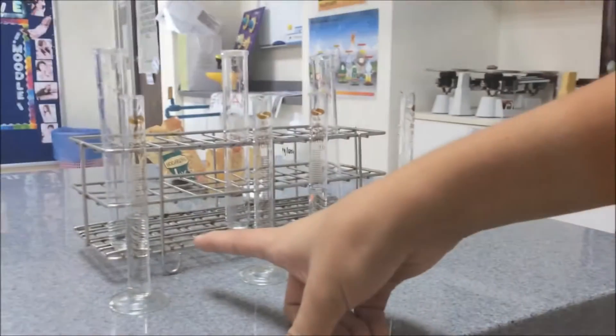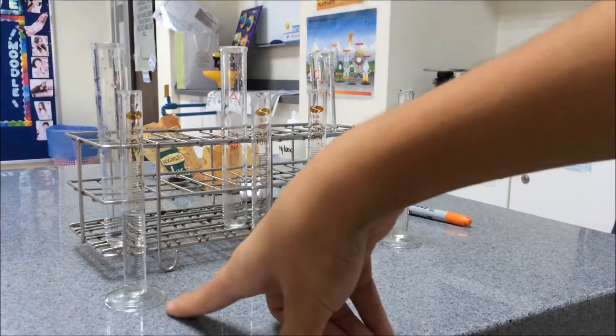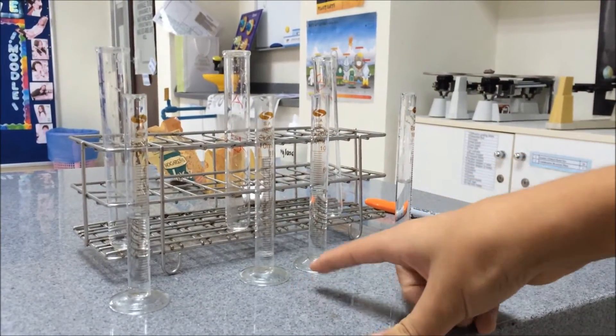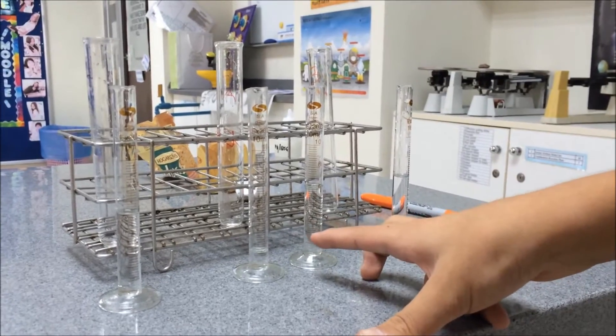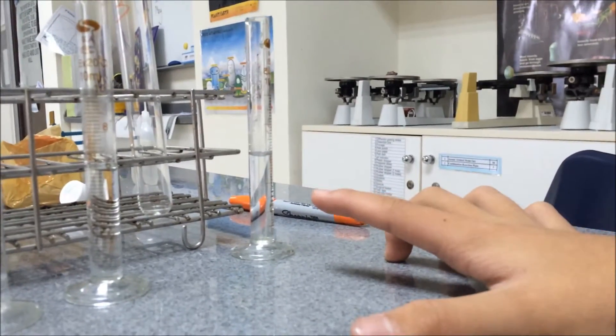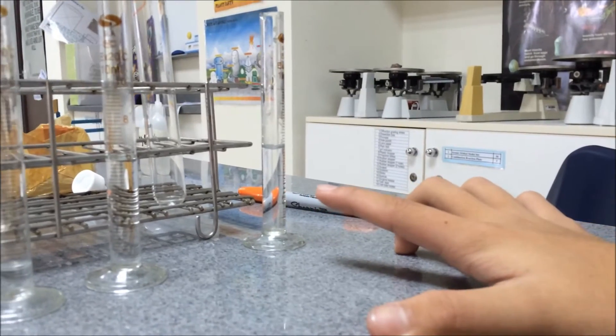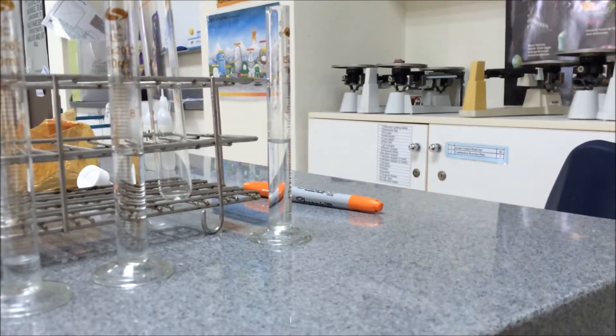In the first tube we have six milliliters of water, in tube number two we have six milliliters of 0.2% amylase, and in the third tube we have six milliliters of amylase and 20 drops of hydrochloric acid.